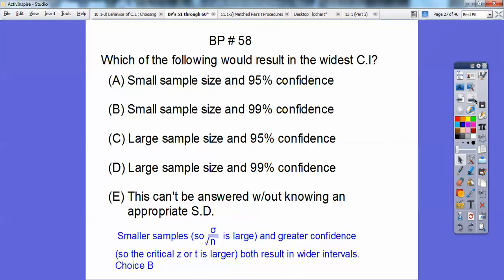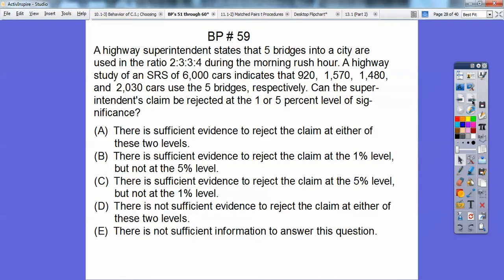So basically, this explains the reason why. Smaller sample sizes, so our standard deviation over the square root of N is large and greater confidence intervals. So the critical Zs ends up being large or Ts, depending on if they give you the standard deviation or not. Z, if they do, and T, if they don't, they both result in wider intervals. So basically, smaller sample sizes makes it wider and 99% confidence interval is going to make it even wider.